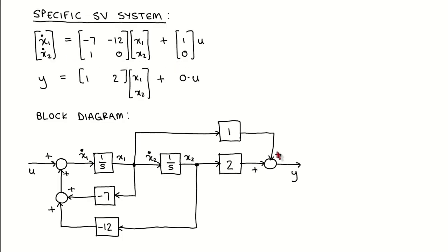The output y is given by 1 times x1 plus 2 times x2, which is the same as the output equation. The block diagram and state variable equations are therefore equivalent.